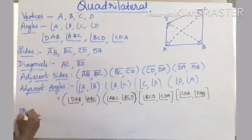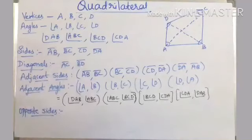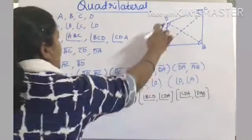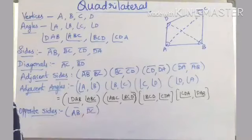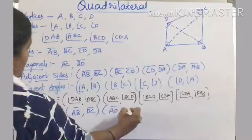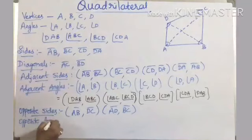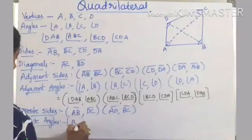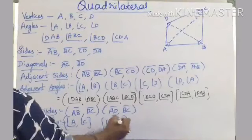Coming to opposite sides — you get only two pairs: AB is opposite to DC, and AD is opposite to BC. Coming to opposite angles — angle A is opposite to angle C, and angle B is opposite to angle D.